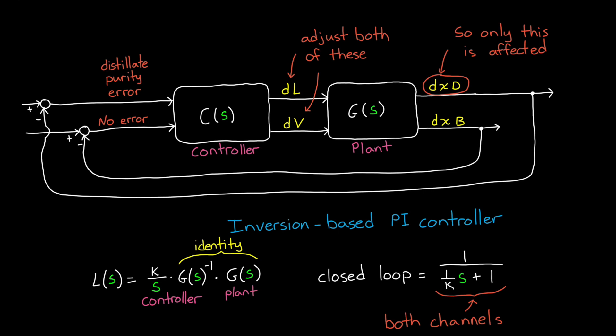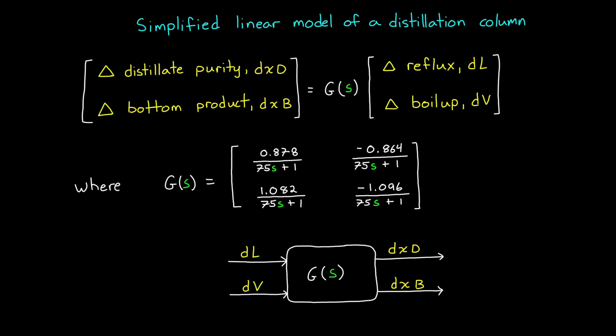But the question is, is this actually a robust design? Will it still work if there's uncertainty or variation in the real system? I mean, we've made a lot of simplifying assumptions in the model, so we know it doesn't perfectly match the real distillation column. And it doesn't matter how well our controller works with this model, if it's not going to work on the real system. So, robustness is important.